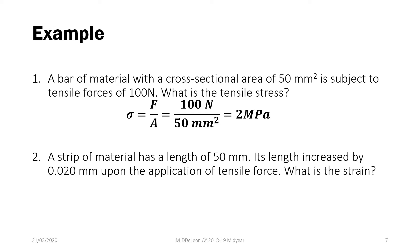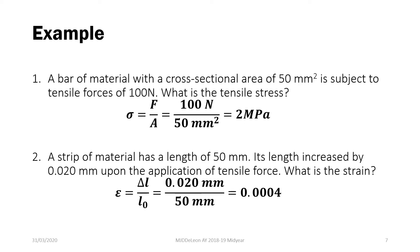For the second problem: a strip of material has a length of 50 mm. Its length increased by 0.020 mm upon the application of a tensile force. Determine the strain. Strain equals delta L over L₀, where delta L is 0.020 mm and L₀ is 50 mm. Dividing, we get 0.0004, or 4 × 10⁻⁴. Notice that the millimeter units cancel and we get a dimensionless value.